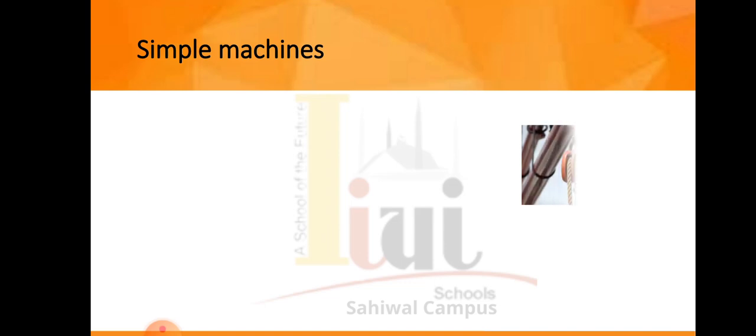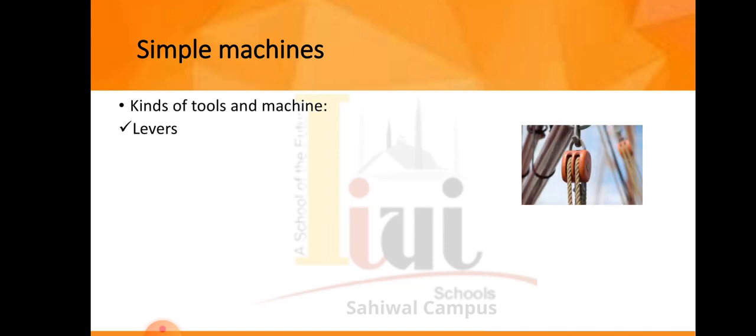The next point is kinds of tools and machines. There are many different kinds of tools and machines: levers, wedges, pulleys, inclined planes, screw, and wheel and axle. Levers and wedges are simple machines. Pulleys and inclined planes are simple machines too.